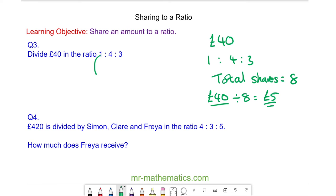So this value will get £5, which is one lot of a share, and four lots of £5 is £20, and three lots of £5 will be £15. Again, we can check it works by adding them together and we do get £40.